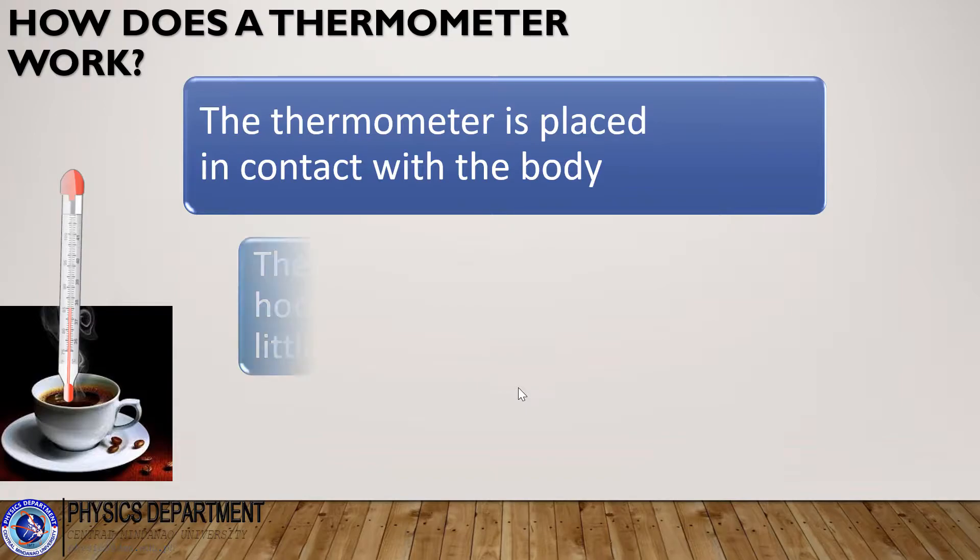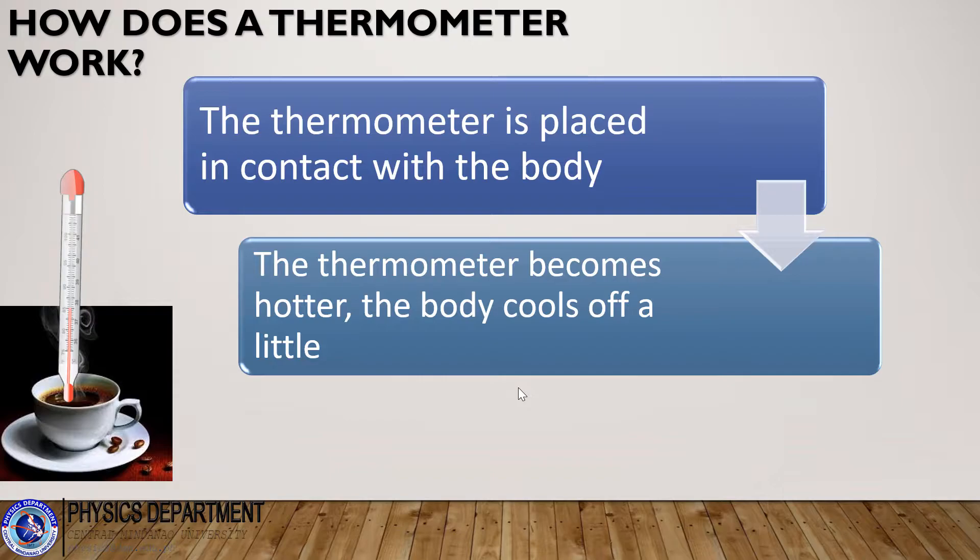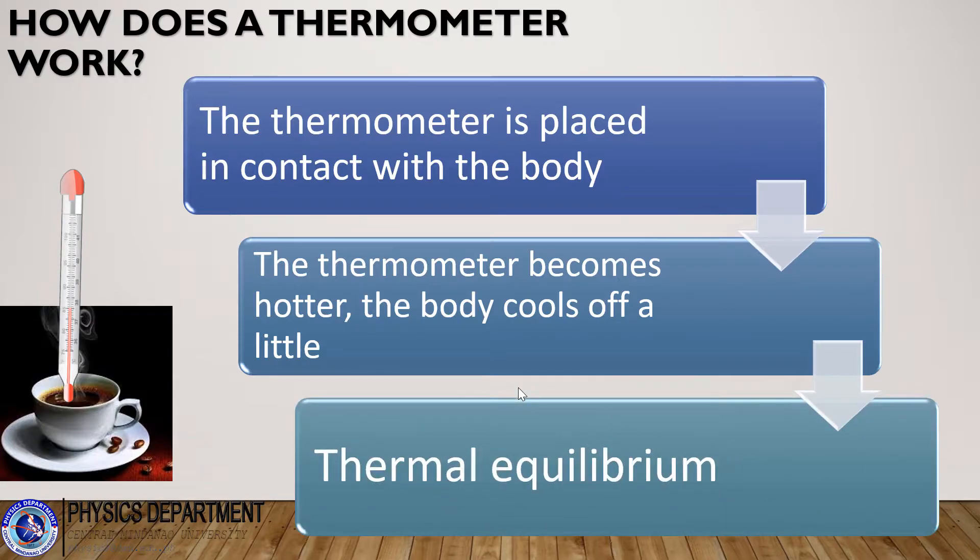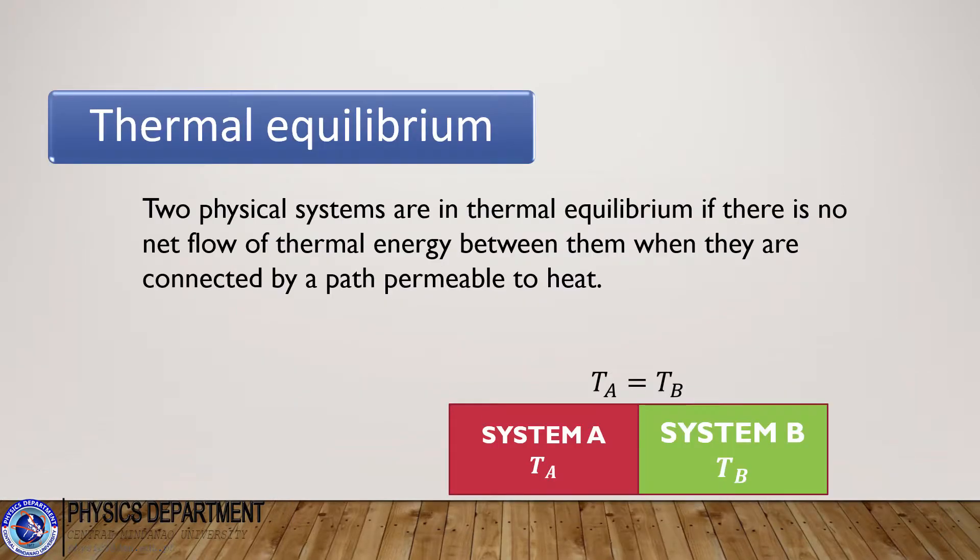As the two interact, the thermometer becomes hotter and the body cools off a little. After the thermometer settles down to a steady value, you can read the temperature, and the system has now reached the state of thermal equilibrium. So what do you mean by thermal equilibrium? Two physical systems are in thermal equilibrium if there is no net flow of thermal energy between them when they are connected by a path permeable to heat. It simply means that if we have two systems, system A with temperature T_A and system B with temperature T_B, these two systems are in thermal equilibrium if their temperatures are equal.